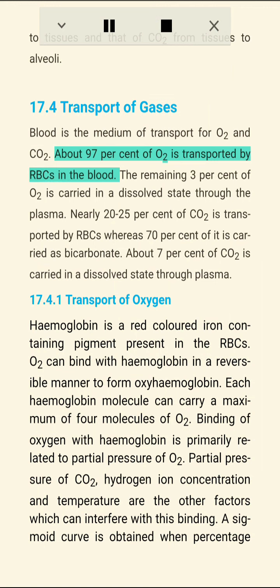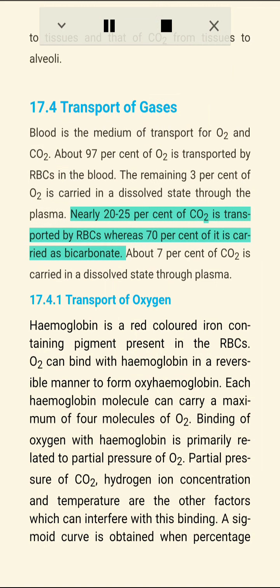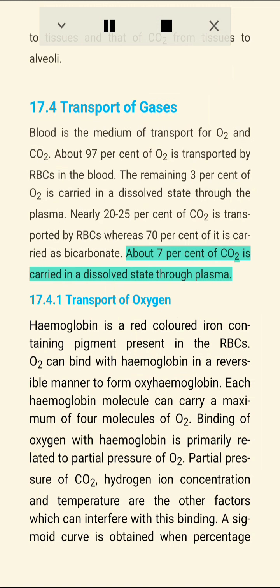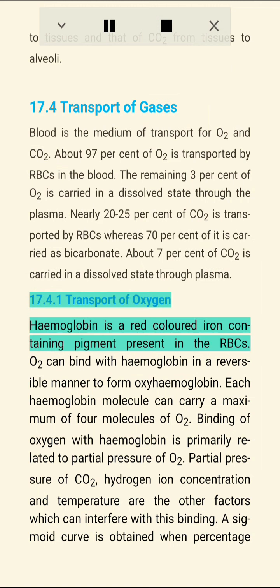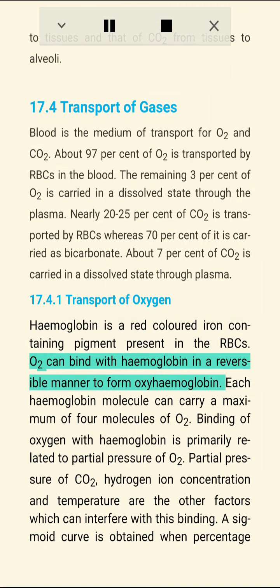Section 17.4: Transport of Gases. Blood is the medium of transport for O2 and CO2. About 97 percent of O2 is transported by RBCs; the remaining 3 percent is carried in a dissolved state through plasma. Nearly 20–25 percent of CO2 is transported by RBCs, whereas 70 percent is carried as bicarbonate, and about 7 percent is carried in a dissolved state through plasma.